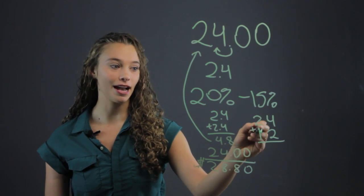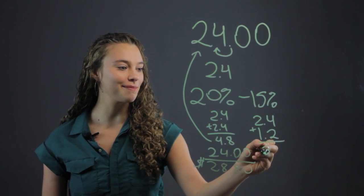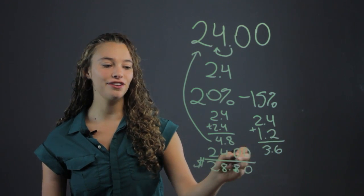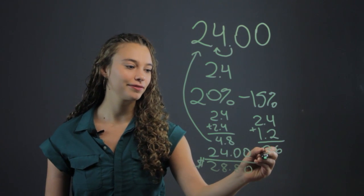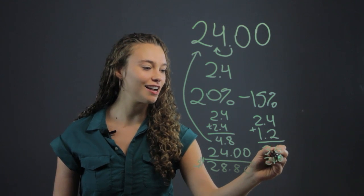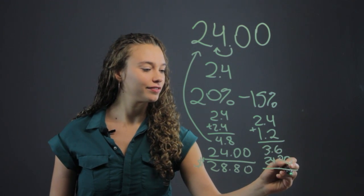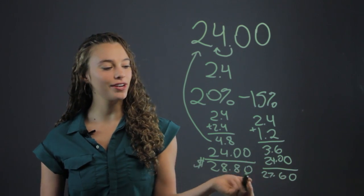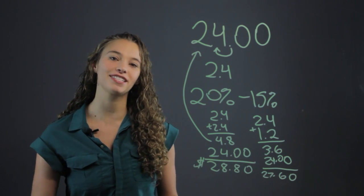They add those two numbers up. Make sure, again, they have the proper alignment. You get 3.6. Again, you just add that to 24. Make sure they line it up. And they get 27.60, and that would be a 15% tip.